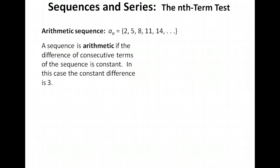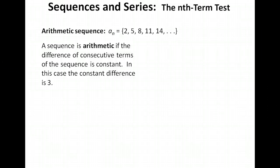Let's start with an arithmetic sequence. We have in our sequence the numbers 2, 5, 8, 11, and 14. What you should notice is that there is a constant difference between the terms of the sequence. In other words, if you add 3 to 2 you get 5, add 3 again you get 8, and continually add 3 you'll get all the terms of the sequence.